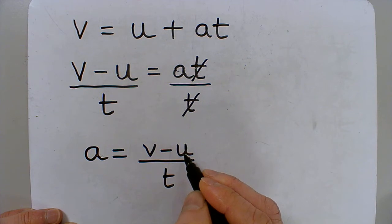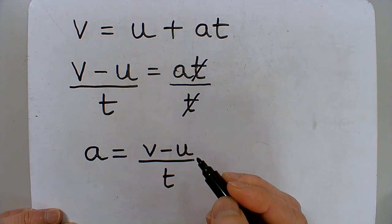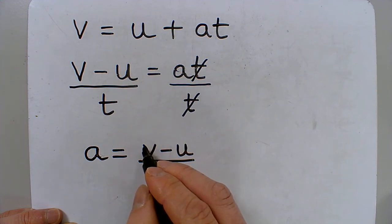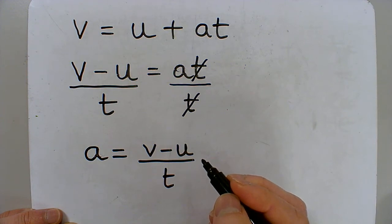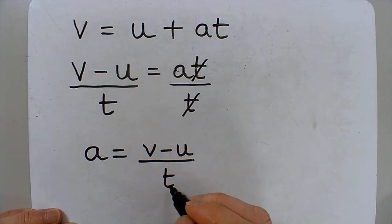We can also say that this is the change in velocity. Sometimes you might be given a question where they don't actually specifically say the final velocity or the initial velocity, but they tell you the change in velocity. So which is the value on the top divided by t on the bottom. And you can find acceleration.